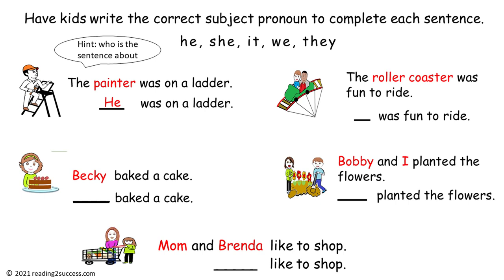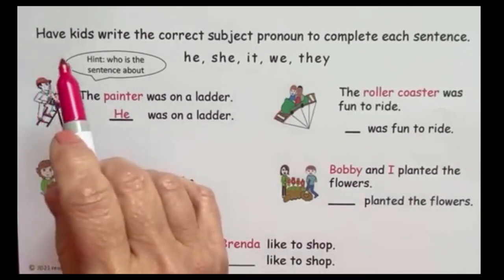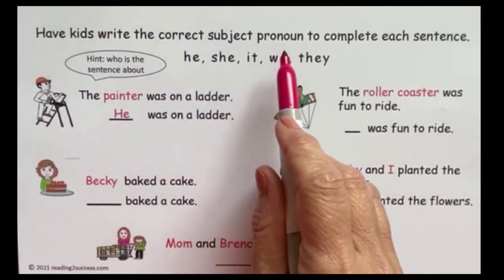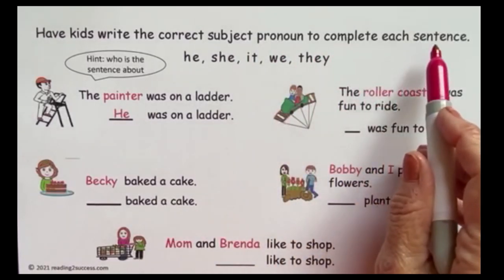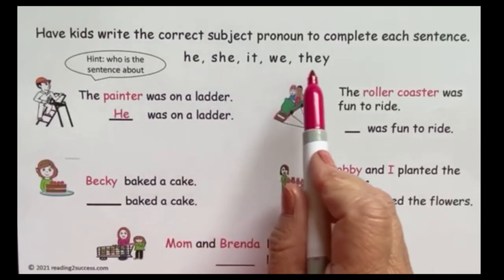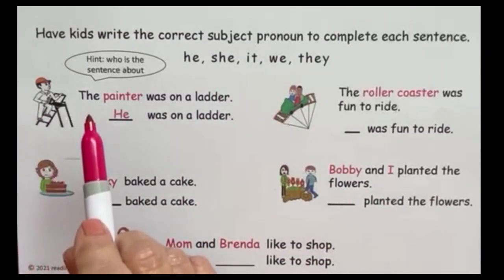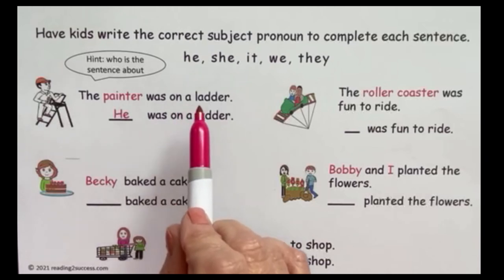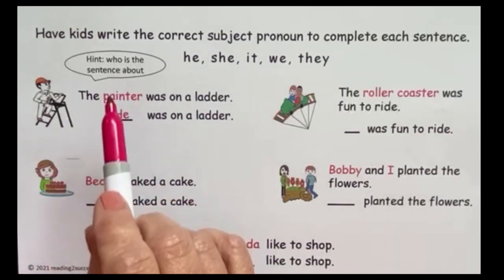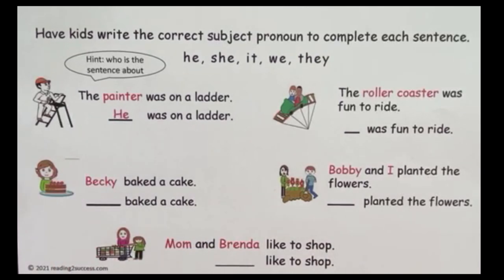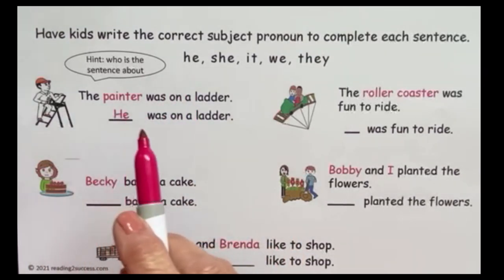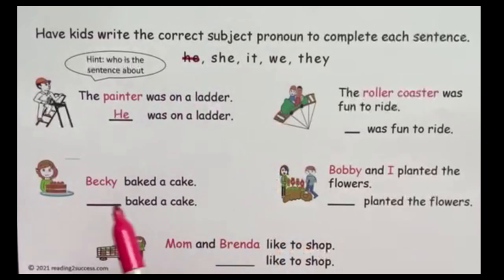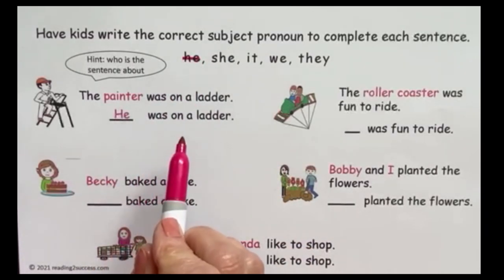This is a template for the first practice page and the demonstration lesson. Have kids write the correct subject pronoun to complete each sentence. The choices are he, she, it, we, and they. Our hint for the first one: who is the sentence about? The painter was on a ladder. The sentence is about the painter, but we need to replace the word 'painter' with a pronoun. He is the correct pronoun, so we're going to cross that off. He was on a ladder.